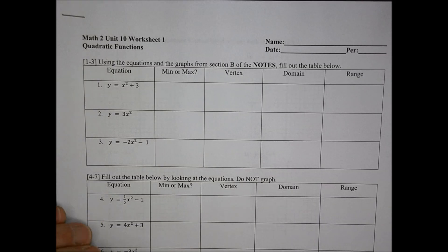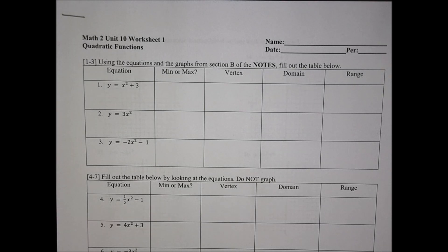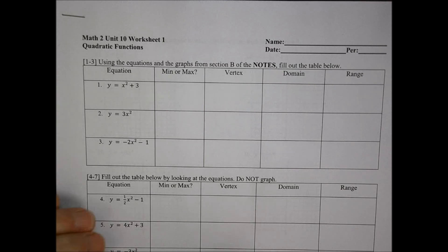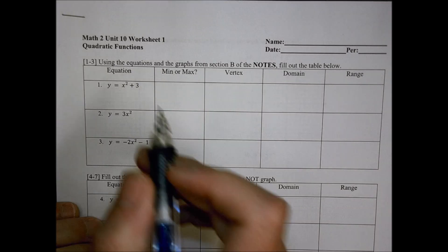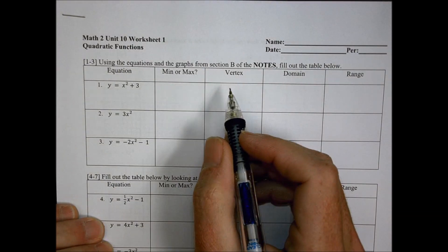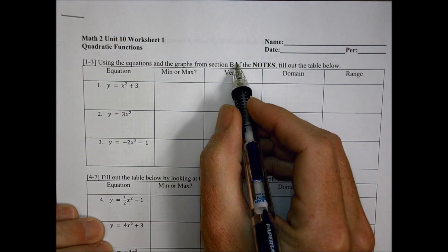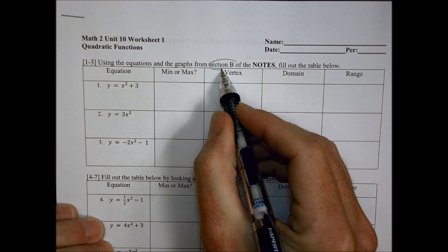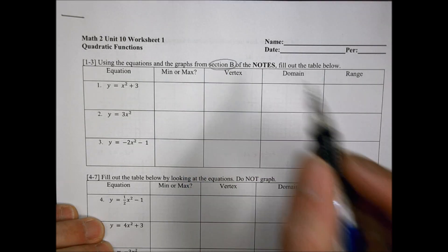Hi, this is Math 2, Unit 10, looking at worksheet number 1. There are two different worksheets in this unit, so it depends on which one your class went with. This is the first option. First, we're going to be taking a look at some equations that come from section B of your notes.